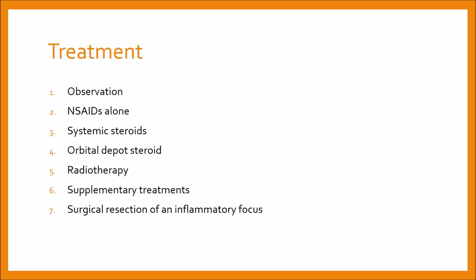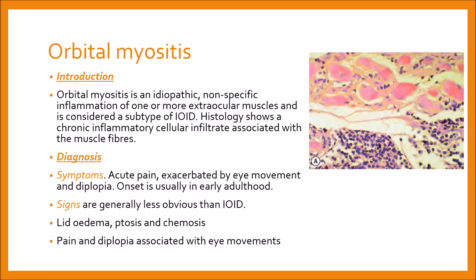That covers idiopathic orbital inflammatory disease. Since it is idiopathic, the origin and cause of the disease remain unknown. Next, we will be discussing orbital myositis, which is an idiopathic non-specific inflammation of one or more of the extraocular muscles, and it is considered a subtype of IOID. Histology shows chronic inflammatory cellular infiltrates associated with the muscle fibers.